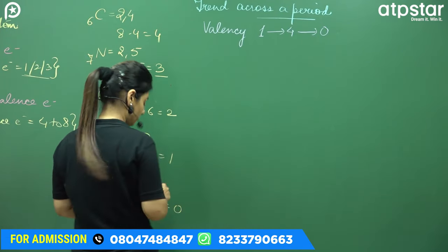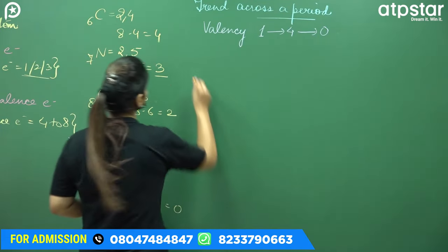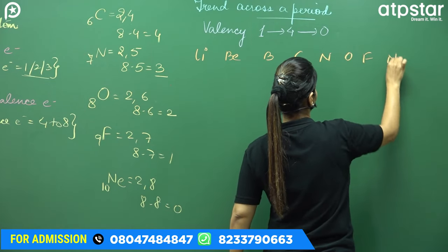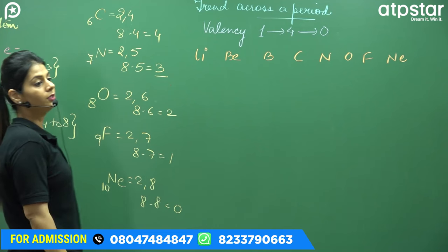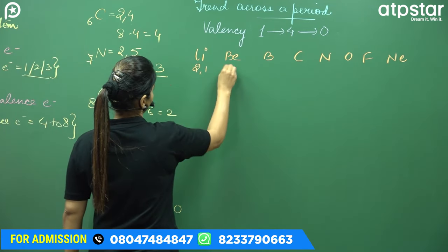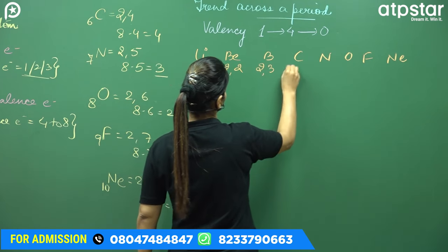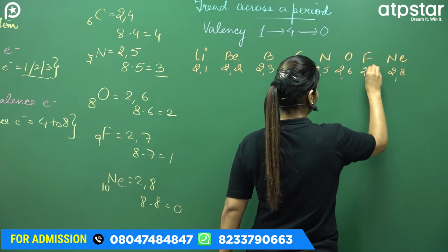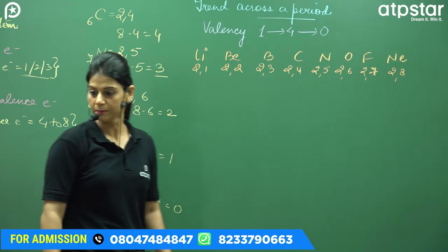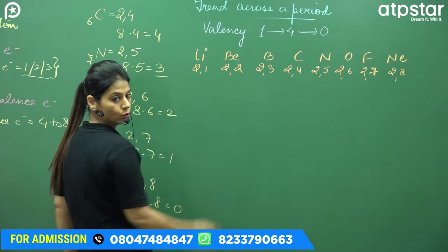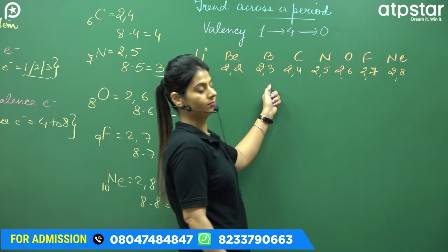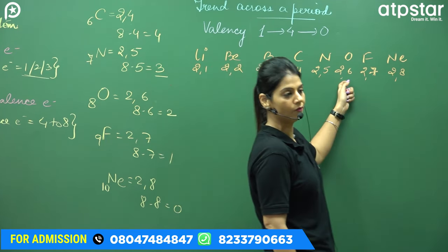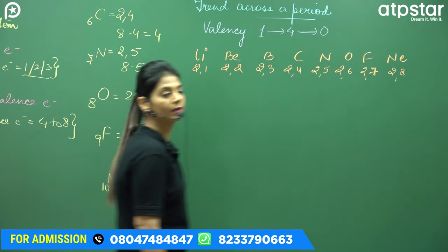Let's take the second period as an example: Lithium, Beryllium, Boron, Carbon, Nitrogen, Oxygen, Fluorine, and Neon. Their configurations are: Li 2,1; Be 2,2; B 2,3; C 2,4; N 2,5; O 2,6; F 2,7; Ne 2,8. In orbital notation: Li is 1s², 2s¹; Be is 2s²; B is 2s², 2p¹; C is 2s², 2p²; N is 2s², 2p³; O is 2s², 2p⁴; F is 2s², 2p⁵; Ne is 2s², 2p⁶.